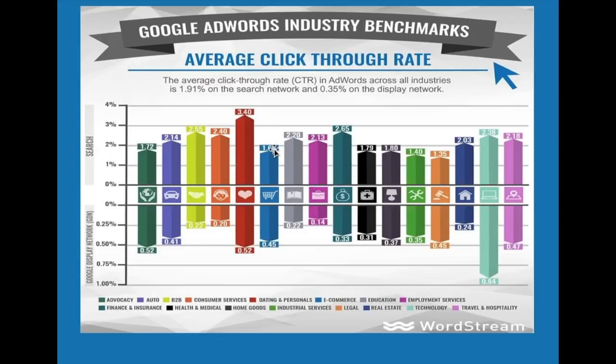You really want to be above your competitor average click-through rate. For dating and personal, it's 3.40% on the search network and 0.52% on the display network — so you want to be above that. The whole goal is to have a better click-through rate than your competitors because Google views that and they're going to give you a better quality score.